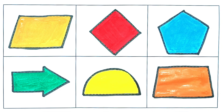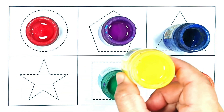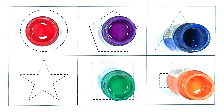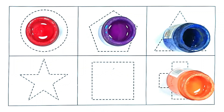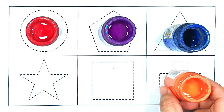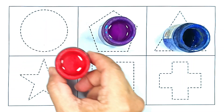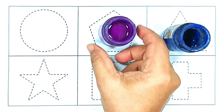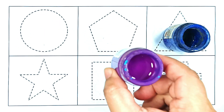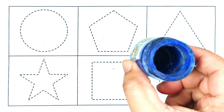Arrow. Semicircle. Trapezoid. Yellow color. Green color. Orange color. Red color. Purple color. Blue color.